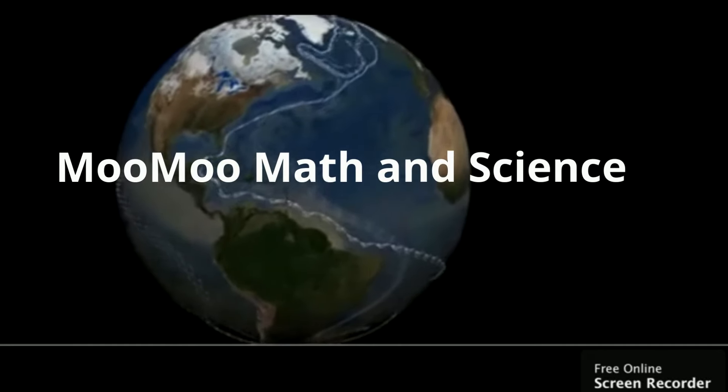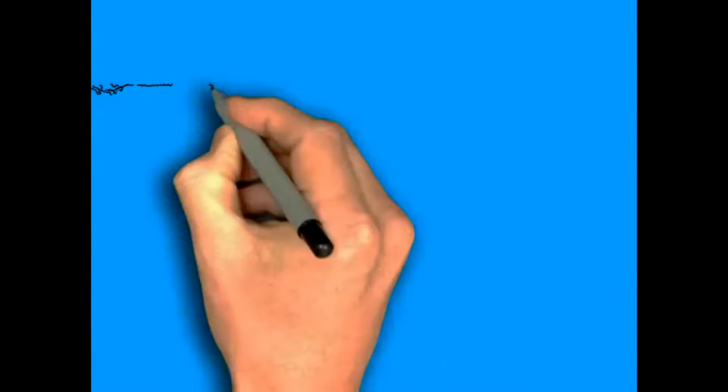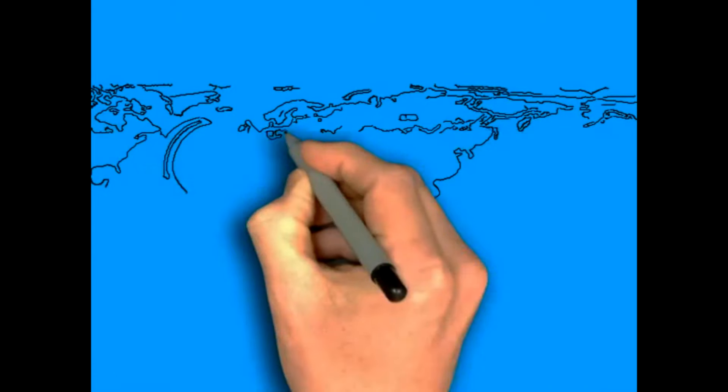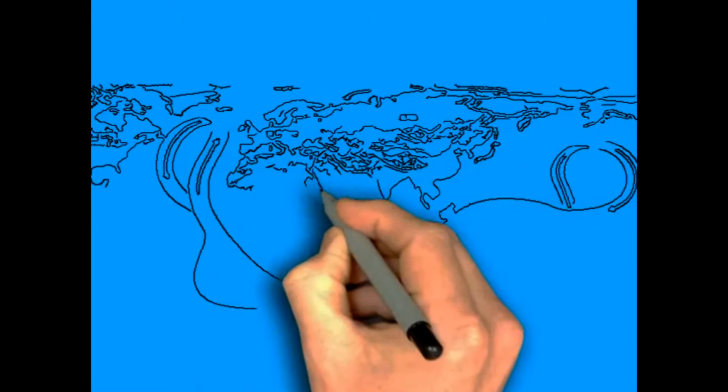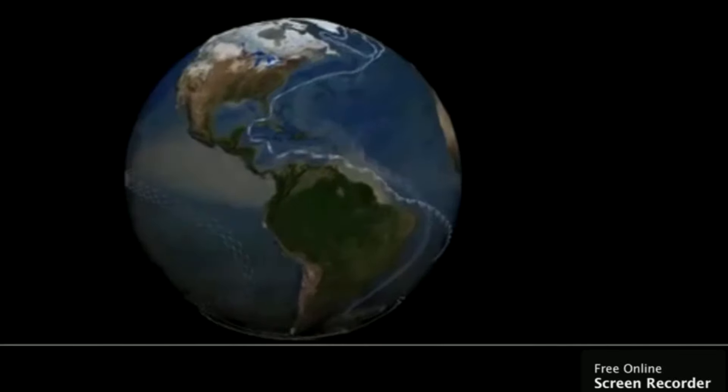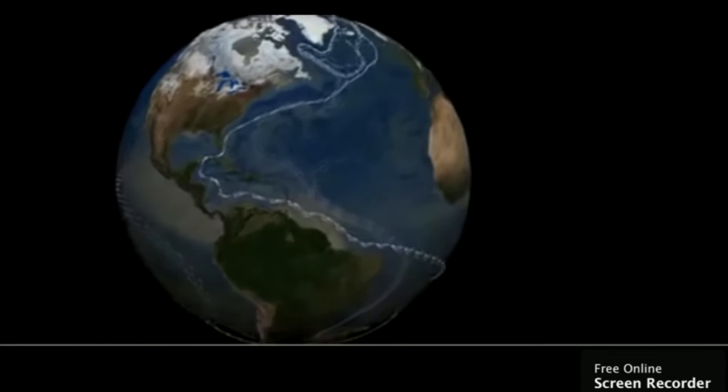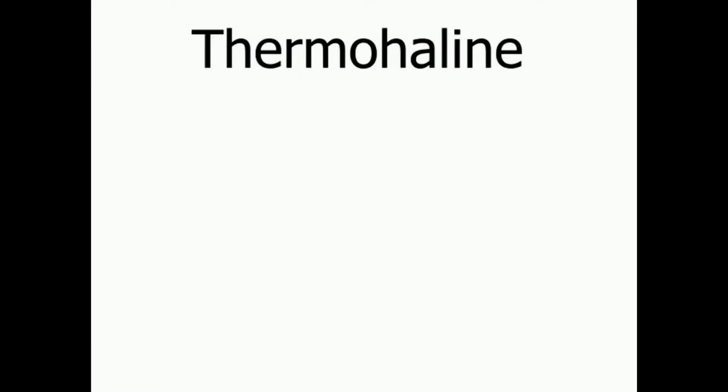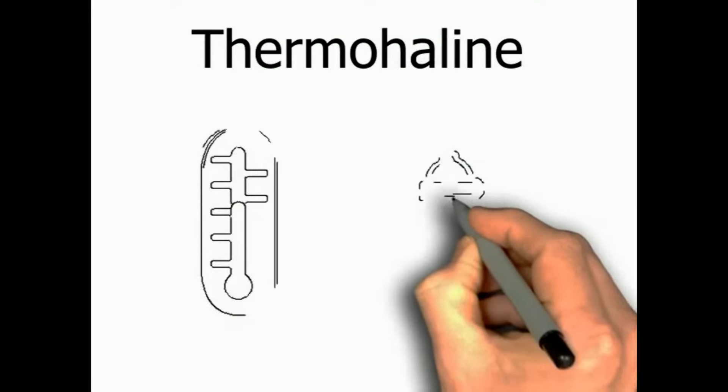Welcome to Moo Moo Math and Science and the Global Conveyor Belt. The Global Conveyor Belt is a series of ocean currents that snake around the world. They are called thermohaline currents because they are the result of changes in temperature and salinity. The adjective thermohaline is derived from thermo referring to temperature and haline referring to salt.